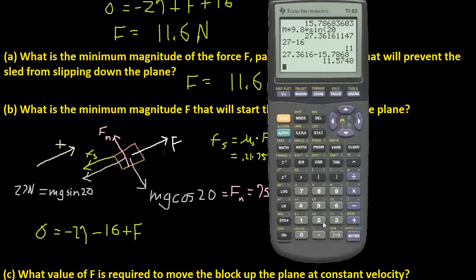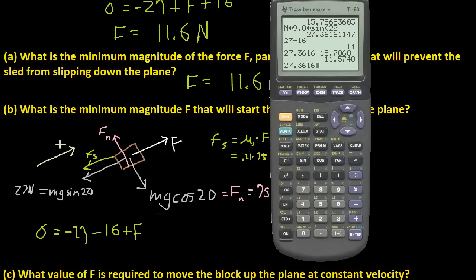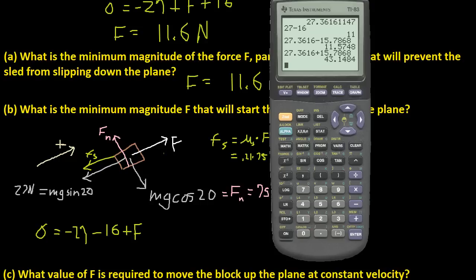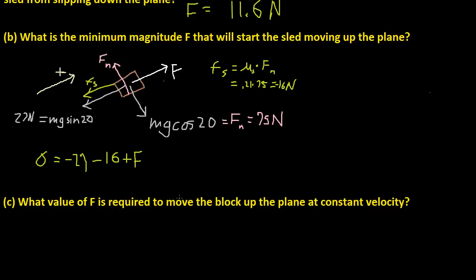Using the real numbers: 27.3617 plus 15.7868 equals F, and we get F equals 43.115 newtons — approximately 43.15 newtons. WebAssign confirmed that answer is correct.